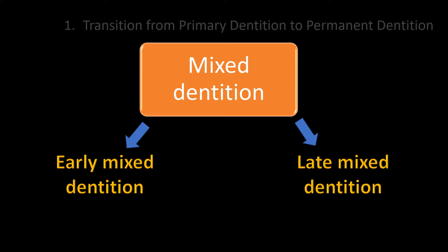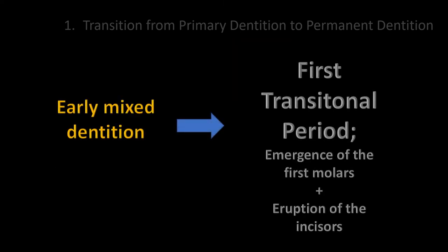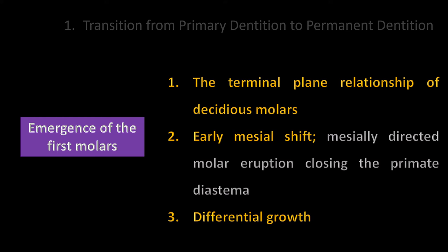There is a lag phase between the early and late mixed dentitions. The late mixed dentition period comprises the eruption of the permanent canines and premolars. The early mixed dentition starts with a specific period during which important changes occur. The transition from flush terminal plane to class I permanent molar relationship occurs progressively, driven by the terminal plane relationship of deciduous molars, mesial shift of molars with eruptive forces, and differential growth of the maxilla and mandible.